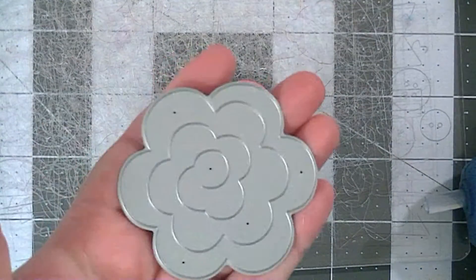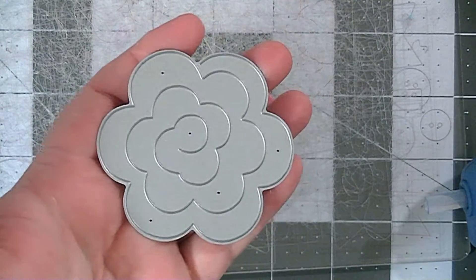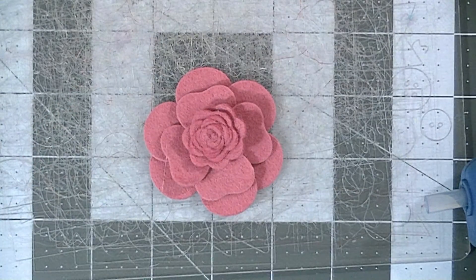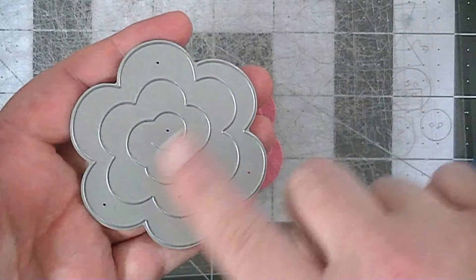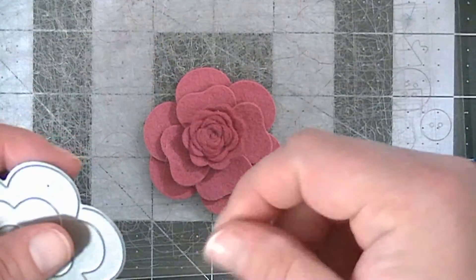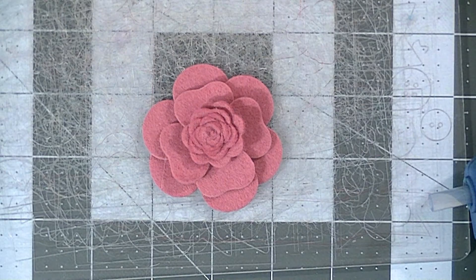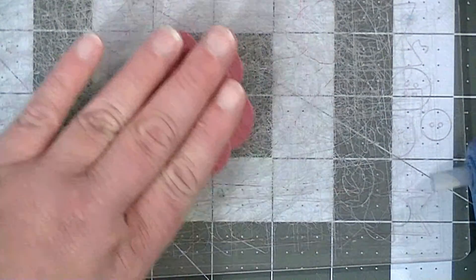This is just another My Favorite Things die called Rolled Rose. It's just another one of those rolled flowers. All you do is cut it and then roll it like we did this piece. I'll link to both of them for you.